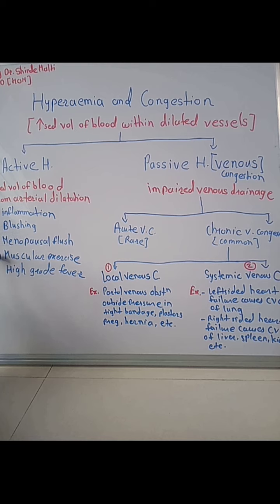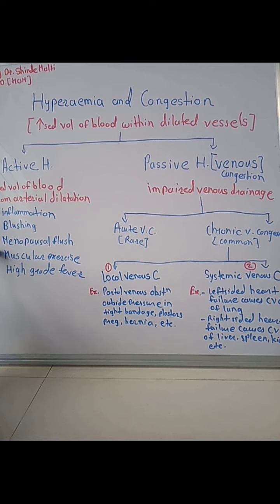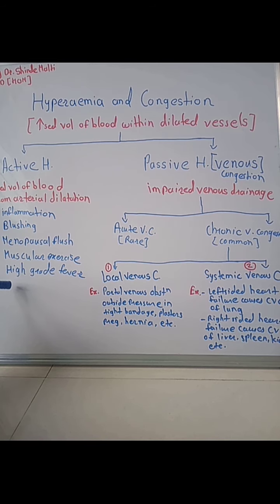Further examples of active hyperemia include menopausal flush, where there is also dilation of arteries; muscular exercise, where dilation of arterioles, arteries, and capillaries gives a reddish appearance; and high-grade fever, where dilation of the arterial circulation causes the reddish appearance of the affected person.